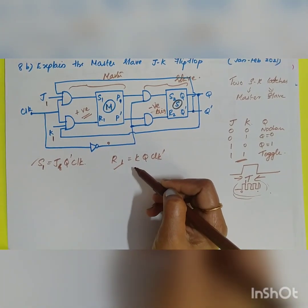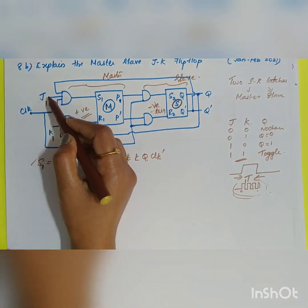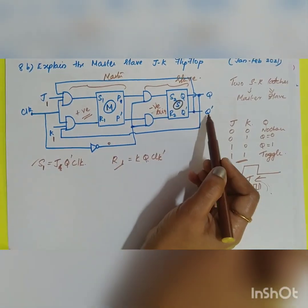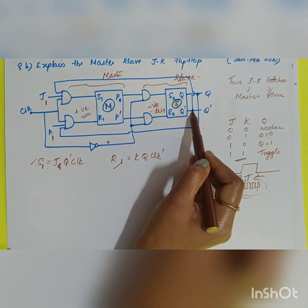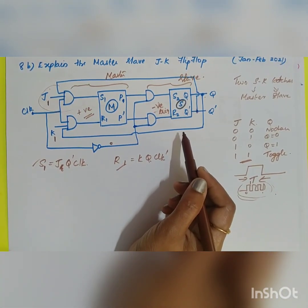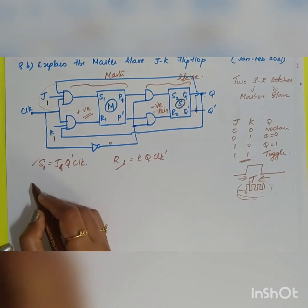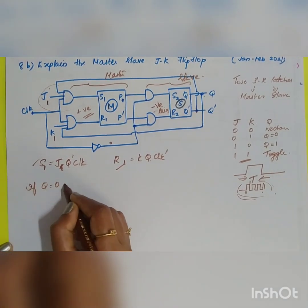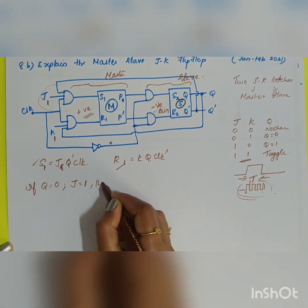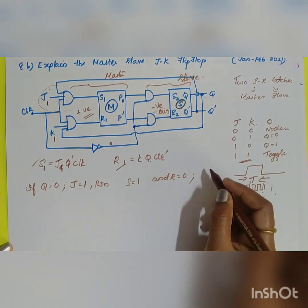Since Q̄ and Q are complementary, at any one time only one AND gate input will be active. Only one of the SR inputs to the first latch can be one at any given time. For the first case, if Q=0 and J=1, then S=1 and R=0, regardless of the value of K.